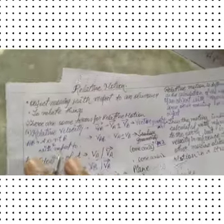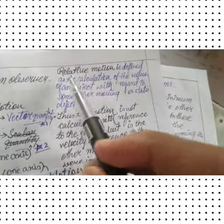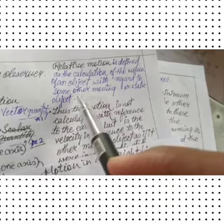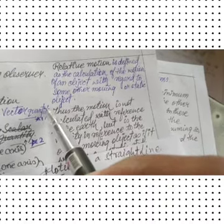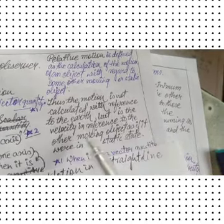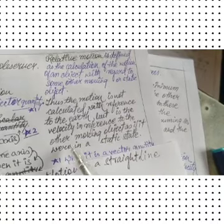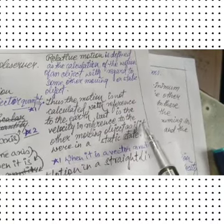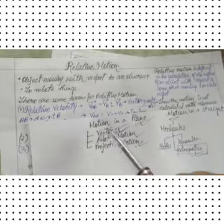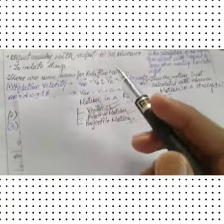Now we will be starting relative motion. Relative motion is defined as the calculation of the motion of an object with regard to some other moving or static object. The motion is not calculated with reference to earth, but is the velocity in reference to the other moving object as if it were in a static state.